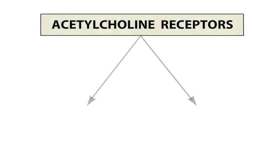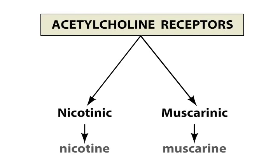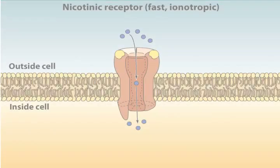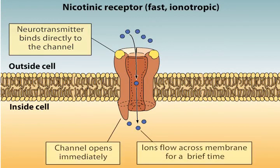There are two broad classes of ACH receptors: nicotinic and muscarinic receptors. These receptors are named after the drugs nicotine and muscarine that selectively activate each of the receptors. Most nicotinic receptors are ionotropic, responding rapidly and usually having an excitatory effect.